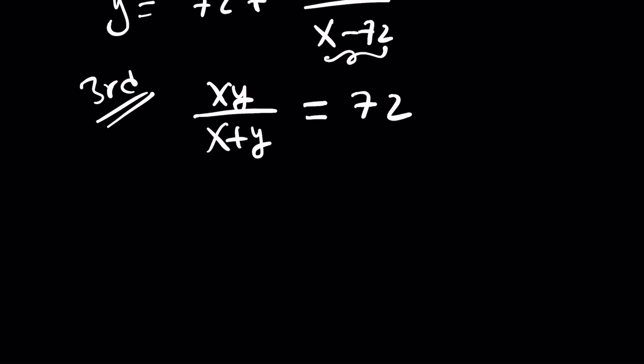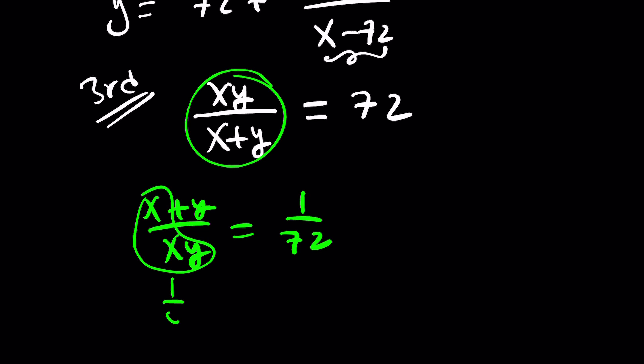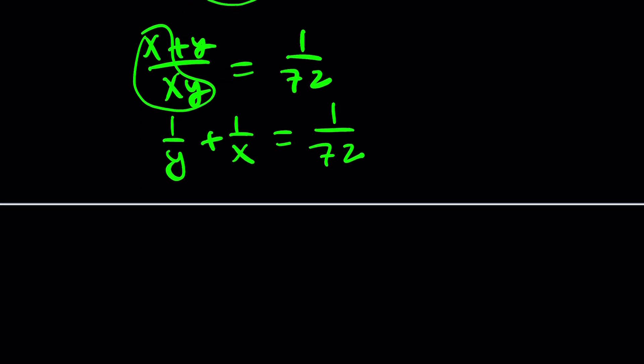So what can I do? Well, here's what I can do. I can flip this because when I do, it's separable. You see what I'm talking about? Now this can be written as x over xy, which is 1 over y, and then 1 over x.